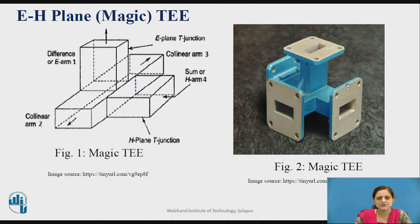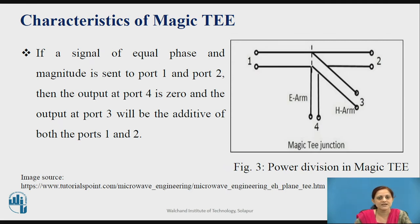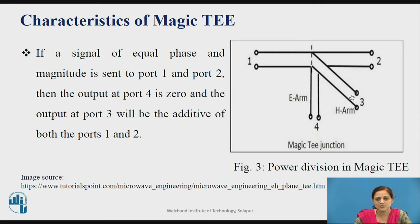In a practical session, you can use this Magic T junction which has port 1, port 2, port 3, and port 4 — which are the E arm and H arm. What are the characteristics of the Magic T? If the signal is applied to port 1 and port 2 with equal phase and magnitude, then the output at port 4 is equal to 0, whereas the output at port 3 is the addition of the inputs at port 1 and port 2. This is known as the additive property of the Magic T.